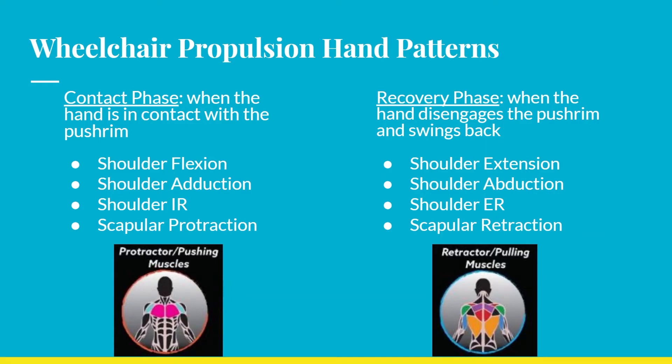We can further subdivide these phases into general physiologic movements. In the contact phase we need shoulder flexion, adduction, internal rotation, and scapular protraction. In the recovery phase we see the opposite: shoulder extension, abduction, external rotation, and scapular retraction. This is helpful to know for how strengthening certain muscle groups may affect specific propulsion phases.